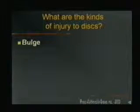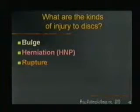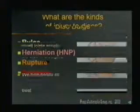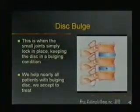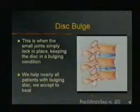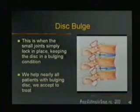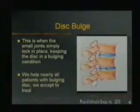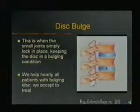What are the levels of disc injury? First there is disc bulge, then herniation, then rupture, and finally prolapse. In a bulging disc, the small joints or facets lock up, keeping the disc in a bulging state. The adjustment can give nearly immediate relief by unlocking the joints, allowing the disc to relax as shown in this illustration. Our success rate is near perfect for new patients with bulging disc whom we accept for treatment.